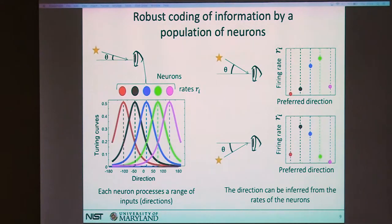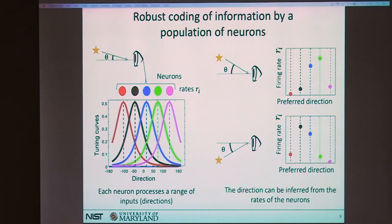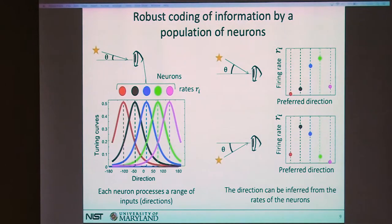Population coding is interesting because it's robust to error — if you lose one neuron, you can still make approximately the same inference. It's robust to loss of neurons and to variability between neurons, which is exactly the kind of issue we also face with nano devices. Additionally, these assemblies of curves form a basis set of functions, meaning that linear combinations of them can construct nonlinear functions. So you can do linear transformations and get nonlinear functions — a good way to transform information.